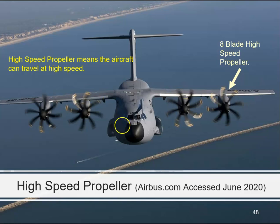An example is the A400M. This is a high-speed propeller, and you can see here that there are eight blades, and you can just about make out that they are scimitar-shaped.